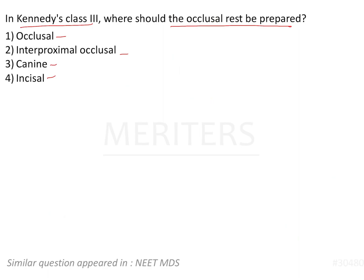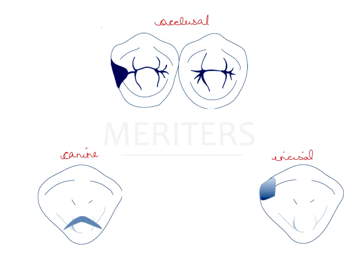Of the three rests that are possible — occlusal, canine, and incisal — the most preferred is occlusal because of its anatomy and topography. It is triangular in shape, takes up a lot of load, and is on the occlusal surface which is not in the aesthetic zone, making it a good rigid component.